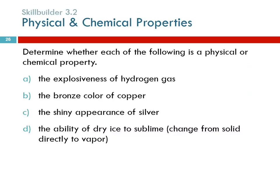Let's identify each of these as a physical or chemical property. The explosiveness of hydrogen gas — chemical. When hydrogen explodes, it becomes something else. The bronze color of copper — that's a physical property; you can observe that without changing what the copper is. The shiny appearance of silver — physical.